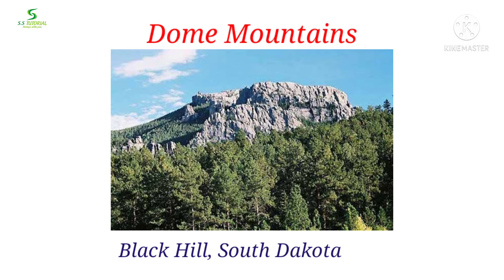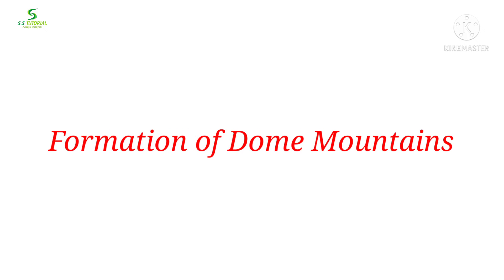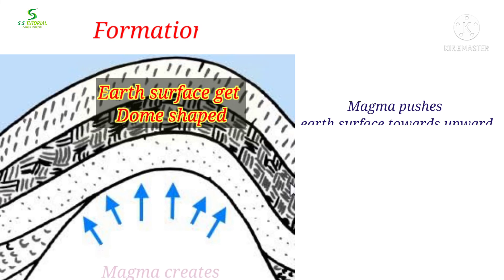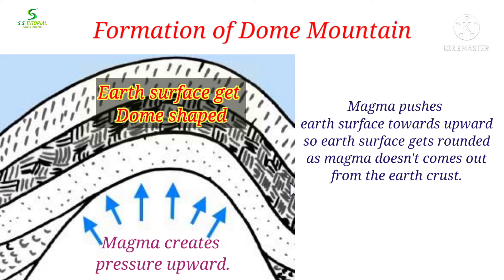Let's know about dome mountains. When a mountain gets a dome shape, it is called a dome mountain. The Black Hills of South Dakota is a notable example. When a large amount of magma rises from the mantle and flows beneath the earth's crust without coming out, it gets solid beneath the crust, creating much pressure and pushing up the surface rocks. The surface rocks then become rounded and dome-shaped — these are called dome mountains.